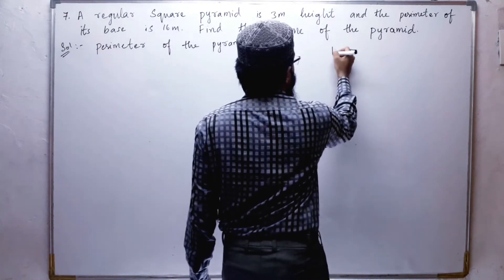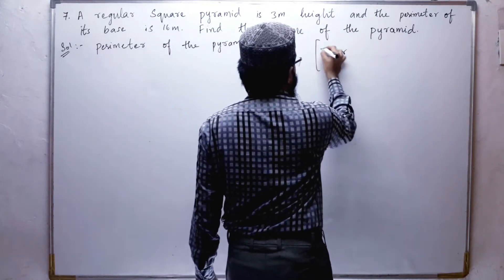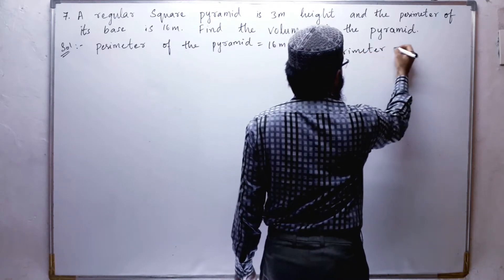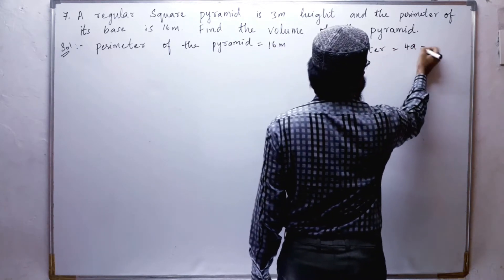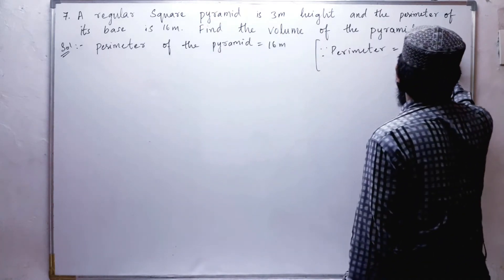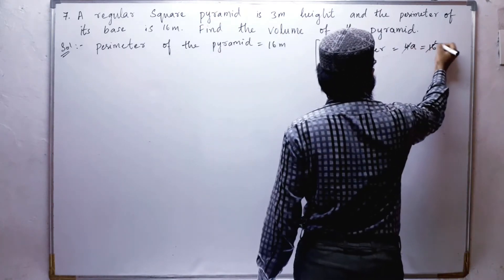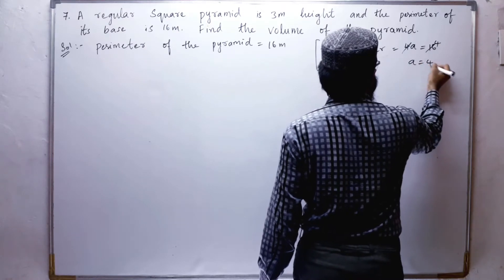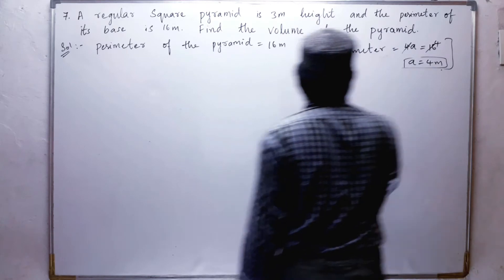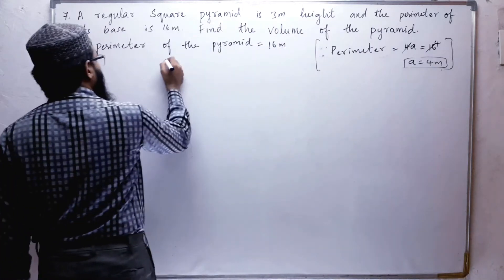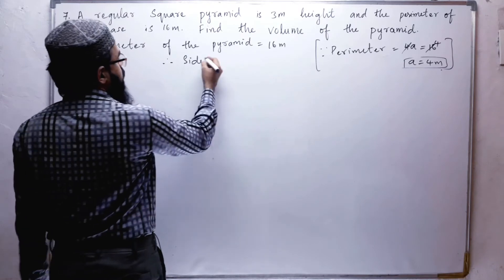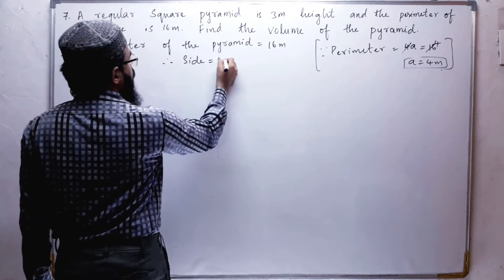The perimeter of a square is 4a, that is 4 times the side. So 4a equals 16, which gives us a equals 4. Therefore, the side of the square base is 4 meters.